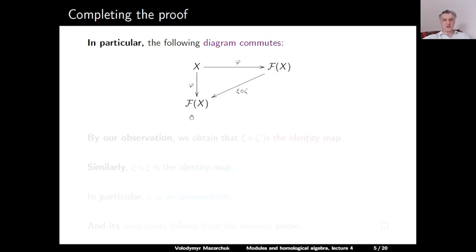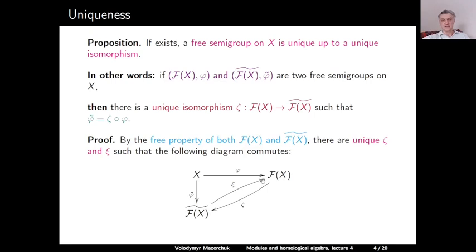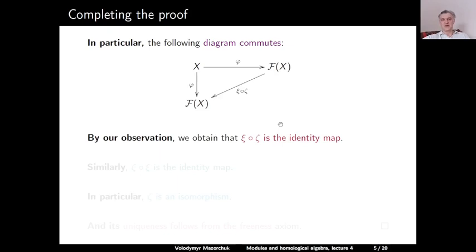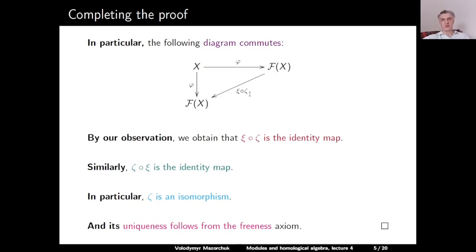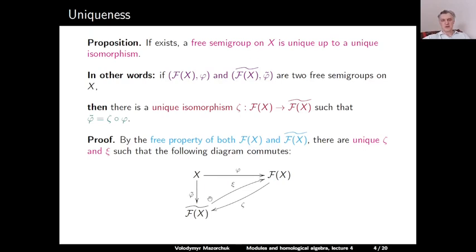We have X and the map φ from F(X) repeated twice, and then ξ after ζ from F(X) to F(X). Since this diagram commutes, by our observation it follows that ξ after ζ is the identity map. A similar argument applied to F̃(X) gives us that ζ after ξ is the identity map. In particular, ζ is an isomorphism. The uniqueness of ζ follows directly from the axiom that such ζ must be unique. This completes the proof of uniqueness.